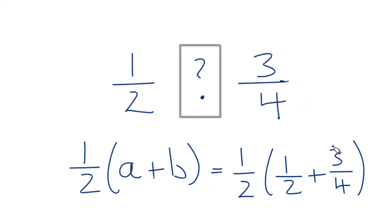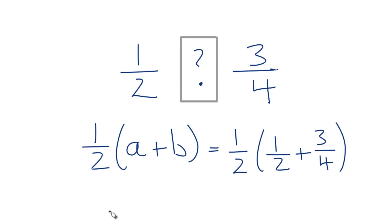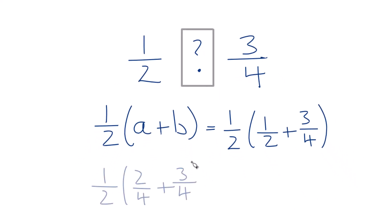What we need to do is add these together and multiply by one-half. So I'm going to change one-half to two-fourths — same value, but that gives me the same denominator. Now these are easier to add together since the denominator is the same.